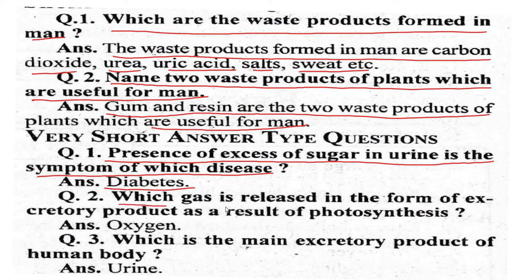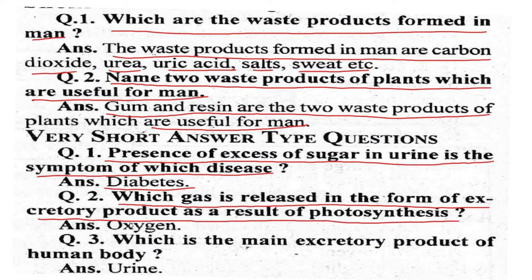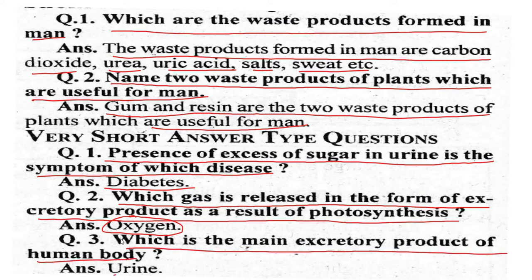Which gas is released as an excretory product as a result of photosynthesis? That is oxygen. And the waste product of the human body excreted as liquid is urine.